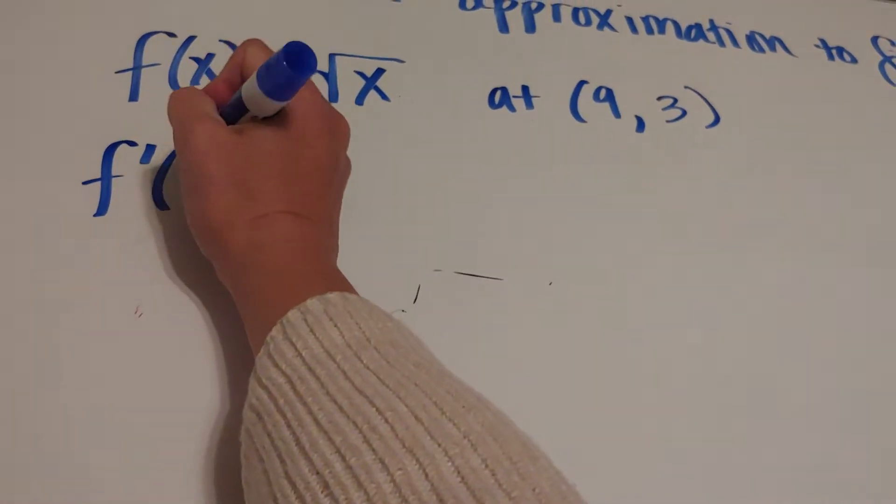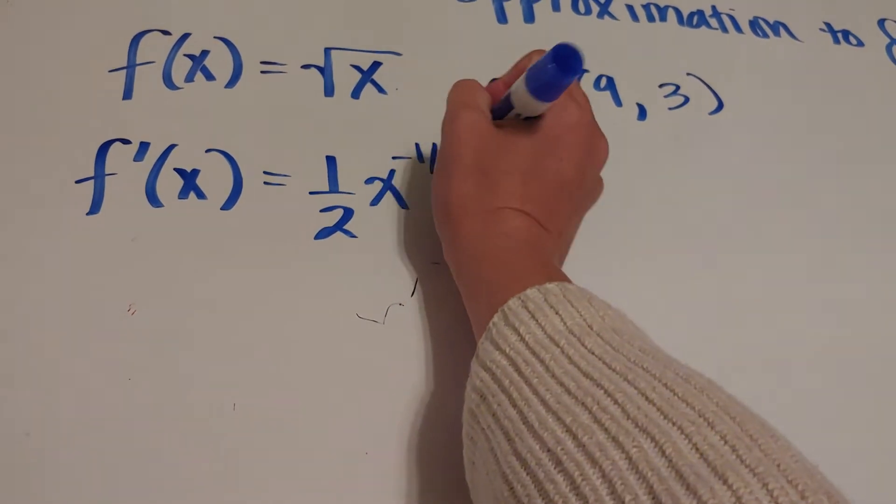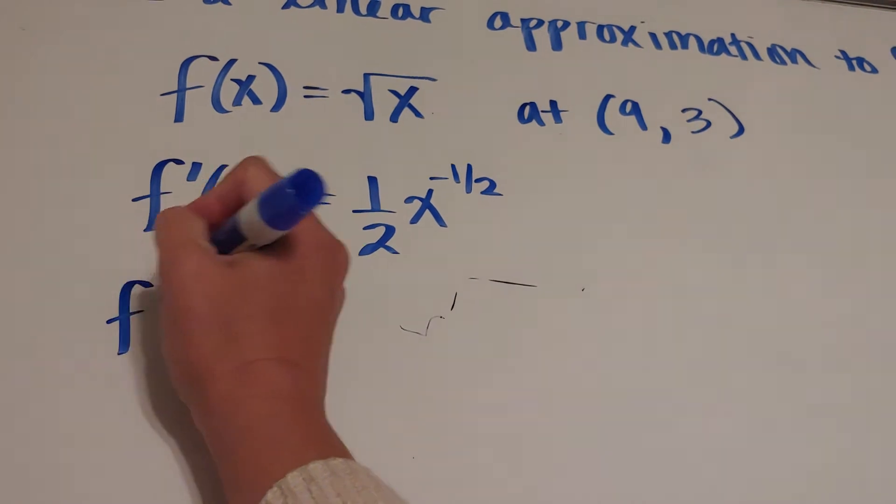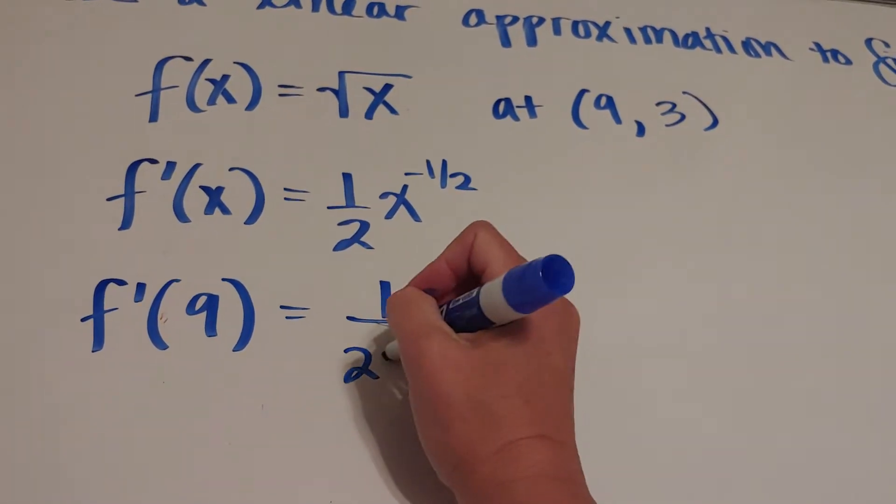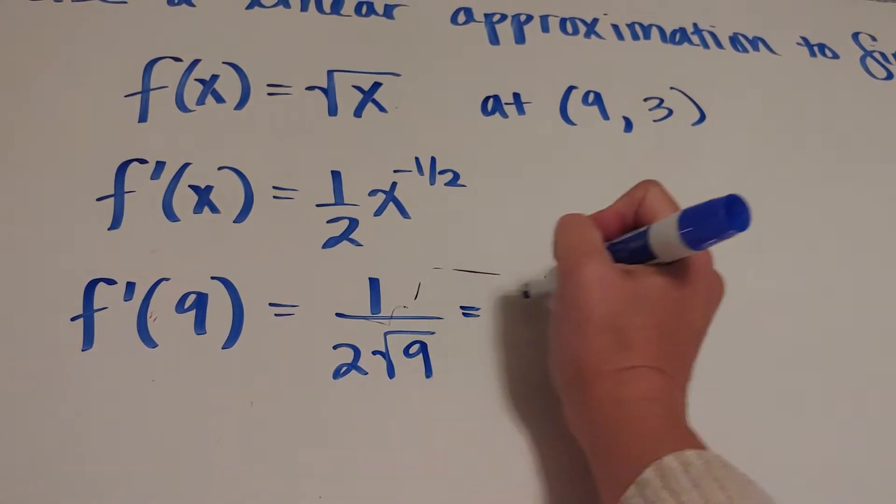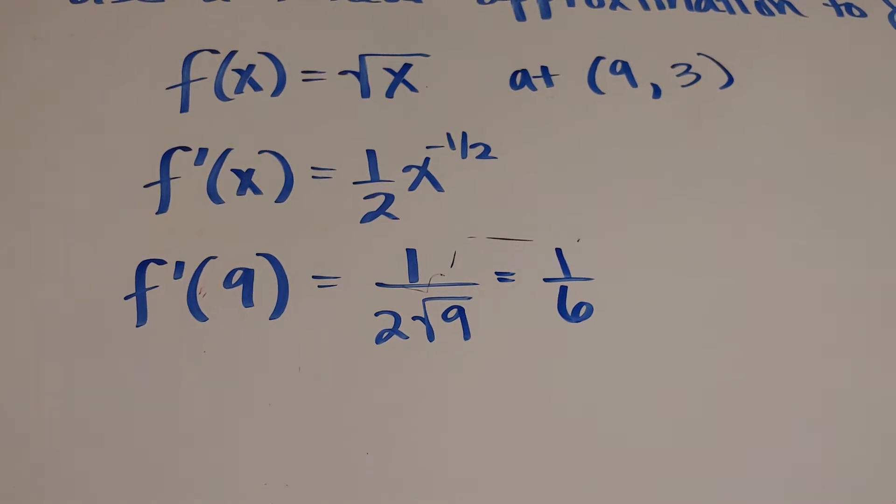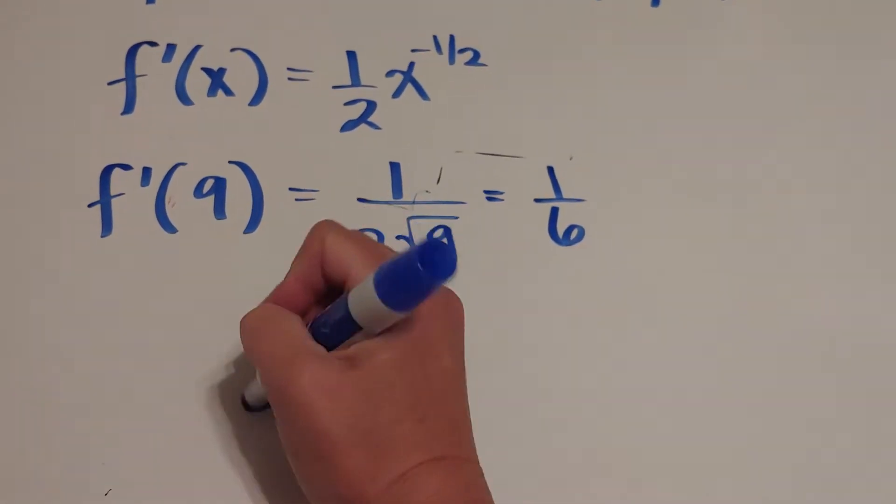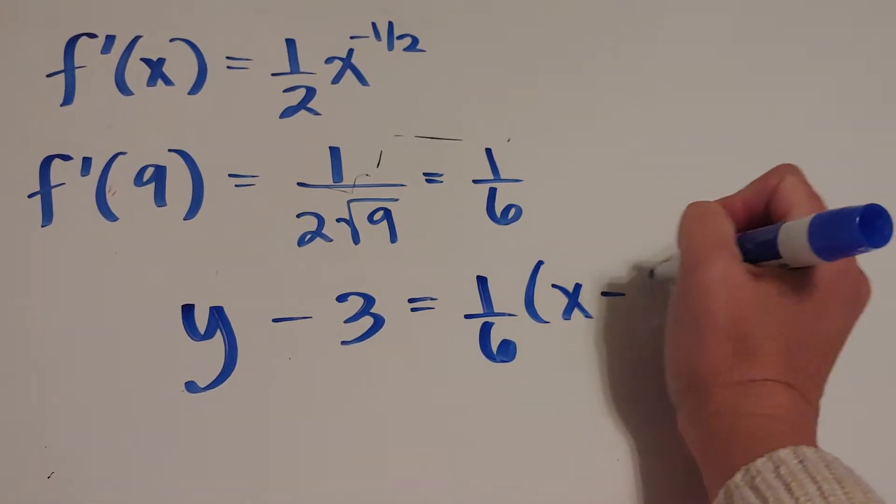Let's go ahead and find this tangent line. To find a tangent line, I do the derivative. Then I plug in my x and I'm going to get a slope of one-sixth. Now my tangent line is y minus three equals one-sixth times x minus nine.